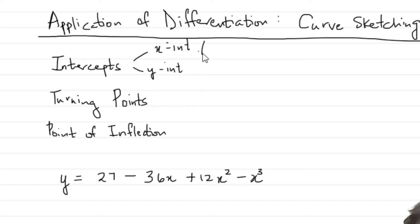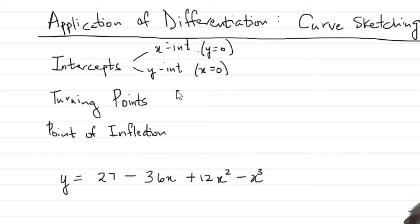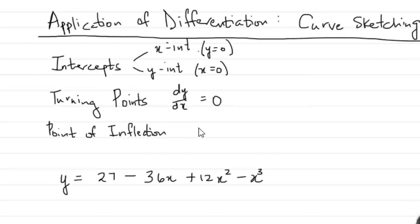For your x-intercepts, you know that the corresponding y value would be equal to zero. For the y-intercept, your x value is equal to zero. For your turning points, the first derivative of the function is zero at that point — so the rate of change, which is the gradient, is going to be zero, meaning you're looking at either maximum or minimum values.